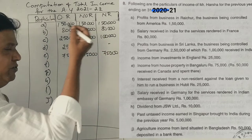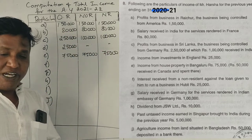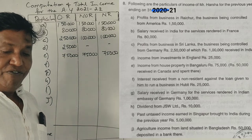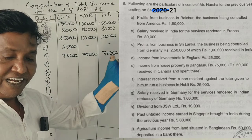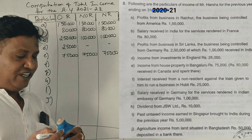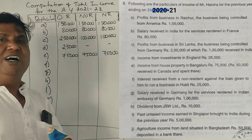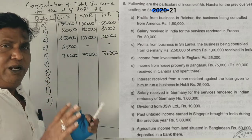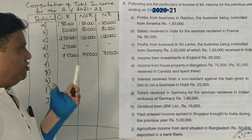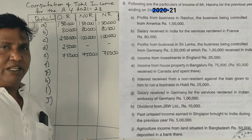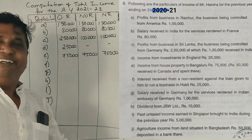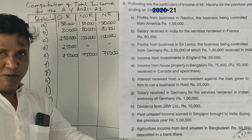50,000 rupees received in Canada and spent there. Paid in England, and they have tax — they received it and it is taxed.